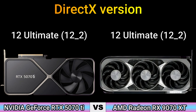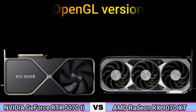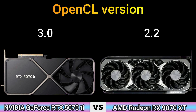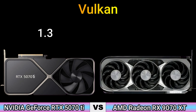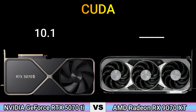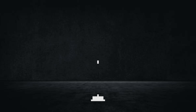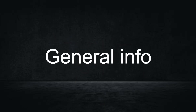Part 3 — Features. DirectX version: 12 Ultimate. OpenGL version: 4.6. OpenCL version: 3.0 and 2.0 (2.2 coming). CUDA: 10.1. Shader model: 6.8.